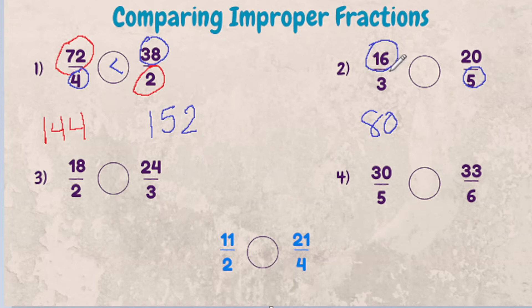First, we're going to multiply 3 times 20 and that answer is going to be 60. Well, 80 is larger than 60, so we know that 16 thirds is greater than 25ths.